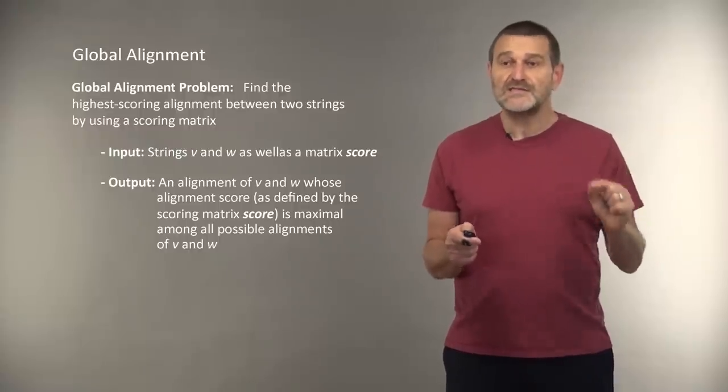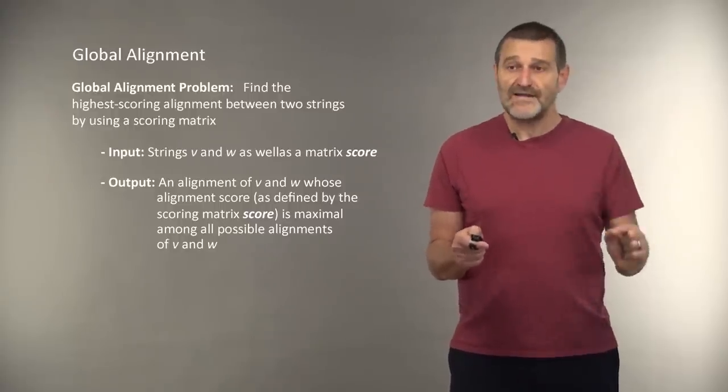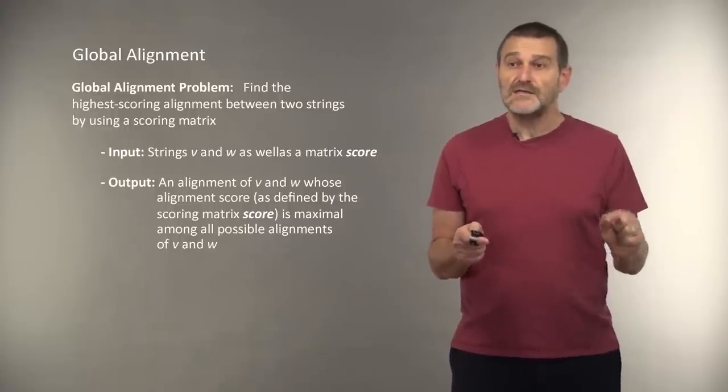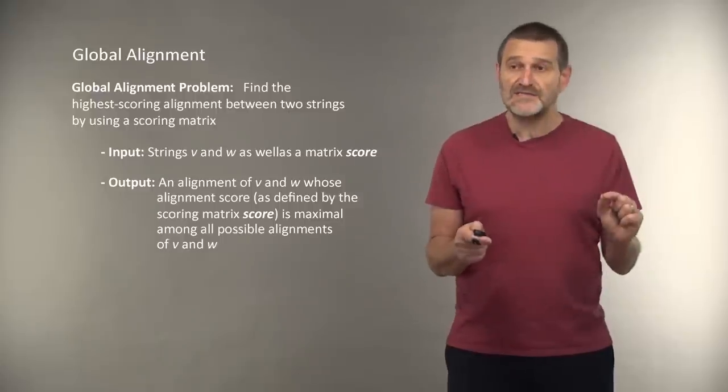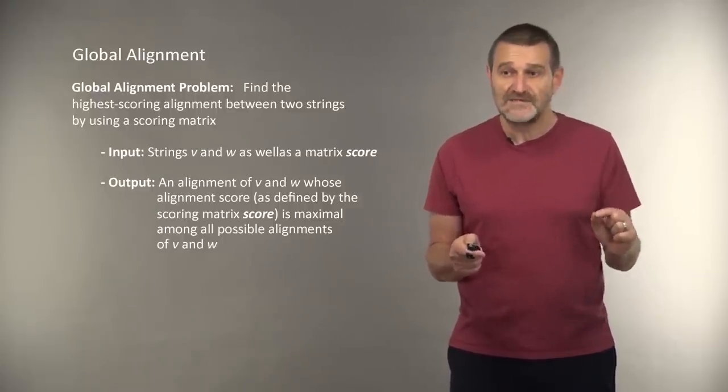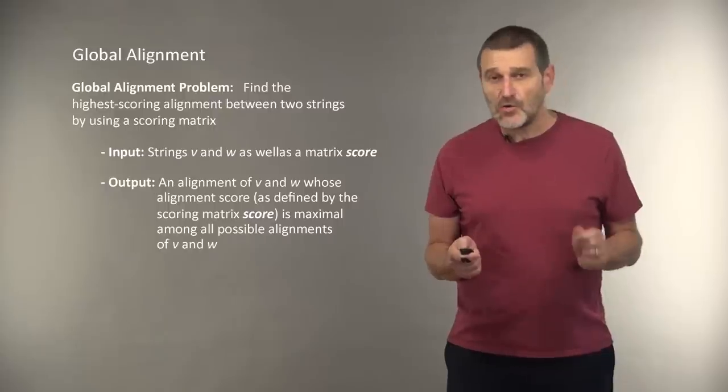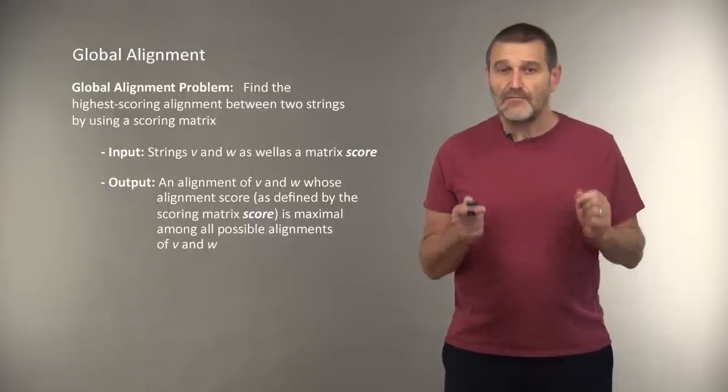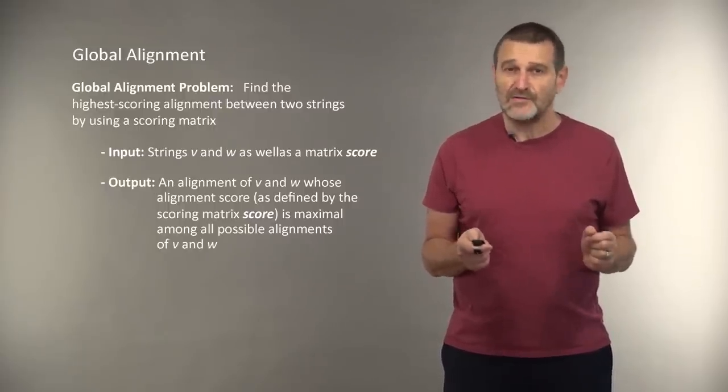Given strings V and W, and a matrix scorer, we want to find an alignment of this string whose alignment score, as defined by the scoring matrix, is maximum among all possible alignments of these strings. Global alignment is a good model for some biological sequence comparison problems, but a bad model for some others.